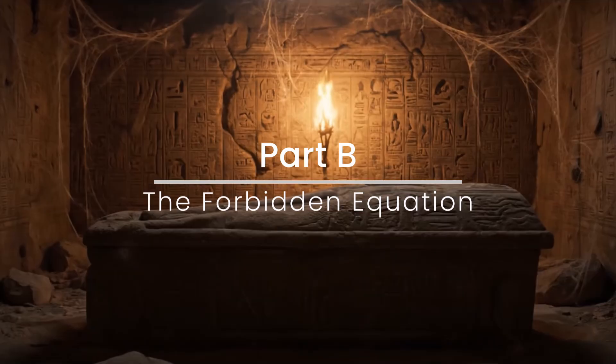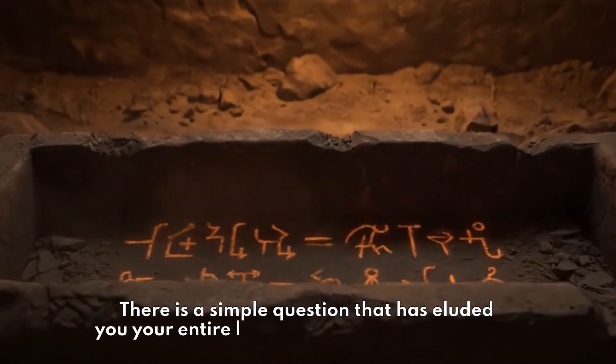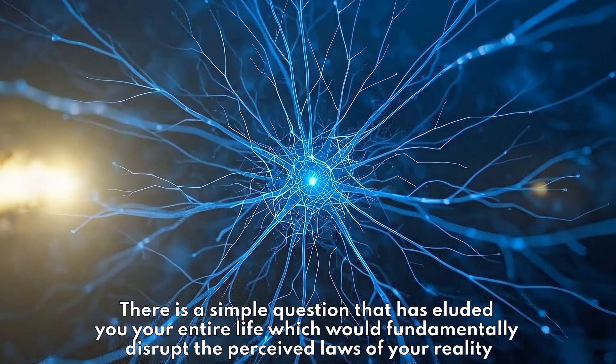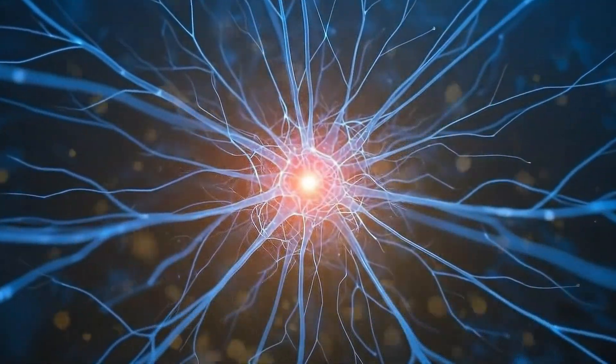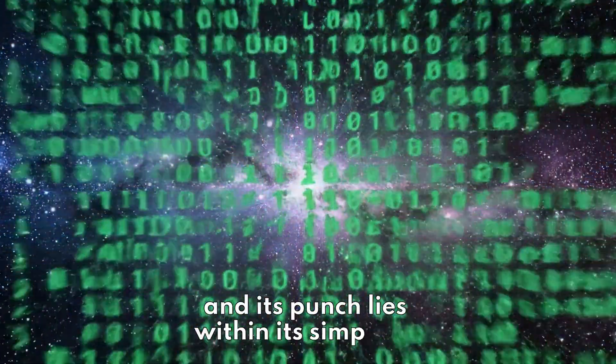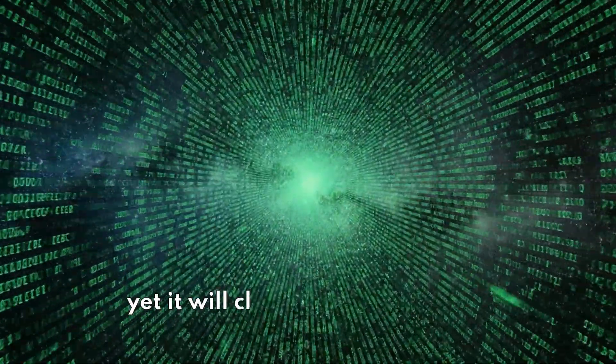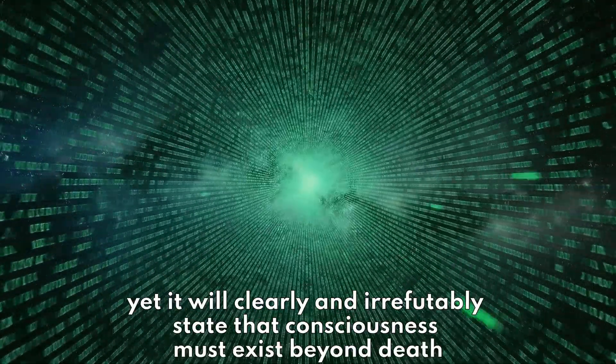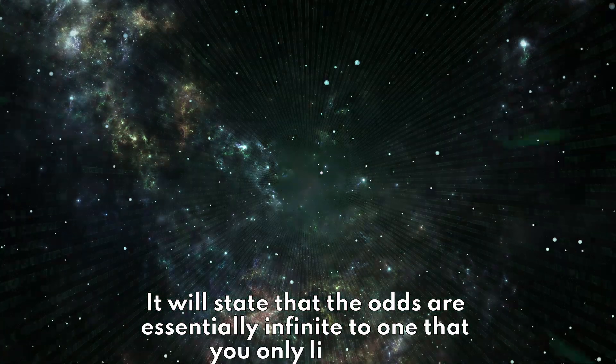Part B. The Forbidden Equation. There is a simple question that has eluded you your entire life which would fundamentally disrupt the perceived laws of your reality. This is the line of logic that forms the heart of this theory. And its punch lies within its simplicity. The logic laid out here will not be hard to follow yet it will clearly and irrefutably state that consciousness must exist beyond death. It will state that the odds are essentially infinite to one that you only live once.